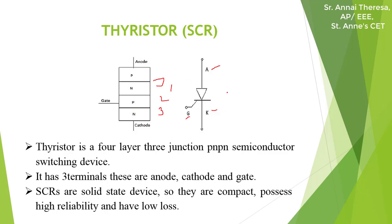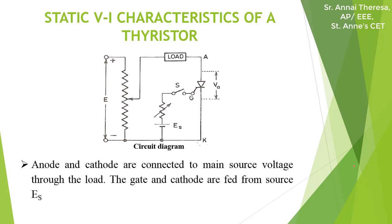It has very low resistance in the forward direction and high resistance in the reverse direction. It is a unidirectional device. Now we can see the static VI characteristics of a thyristor. This is the circuit diagram. The anode and cathode terminals are connected to the battery — anode to positive and